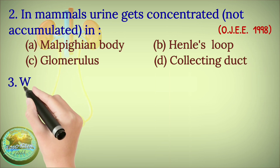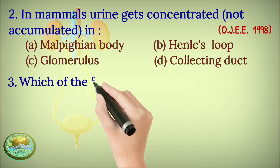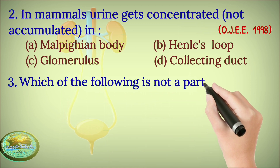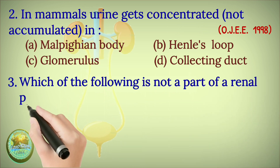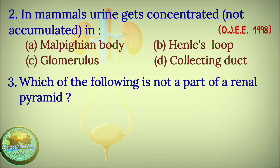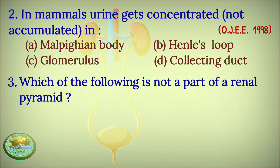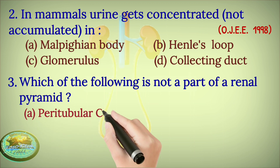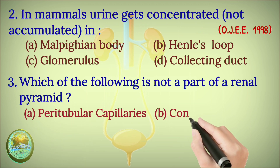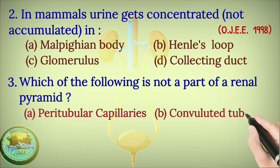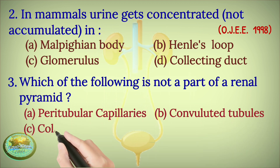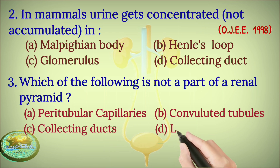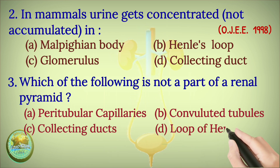Question 3: Which of the following is not a part of a renal pyramid? Peritubular capillaries, convoluted tubules, collecting ducts, or loop of Henle?